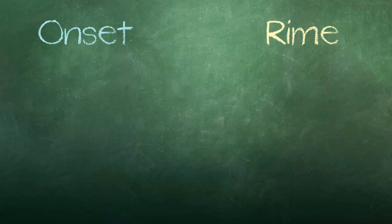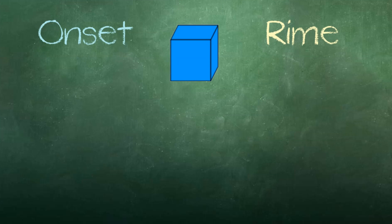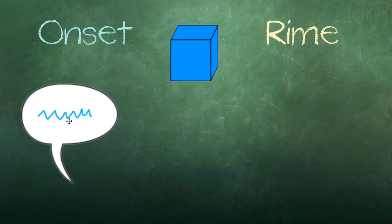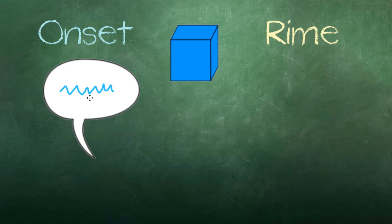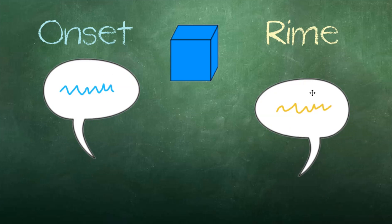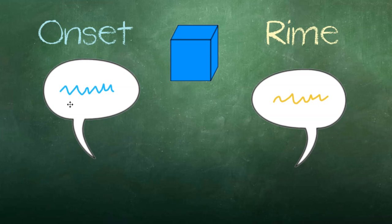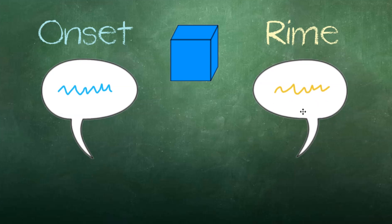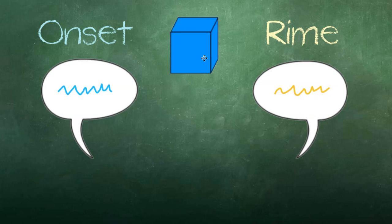Let's look at another word: block. The onset is 'bl'. The rhyme is 'ock'. Bl, ock, block.